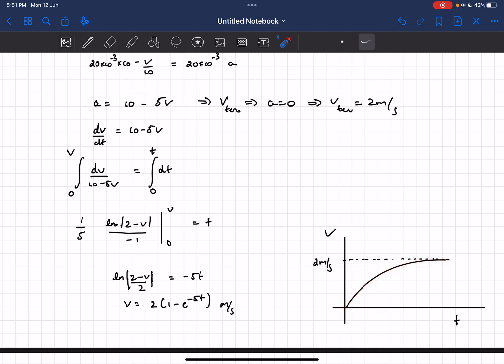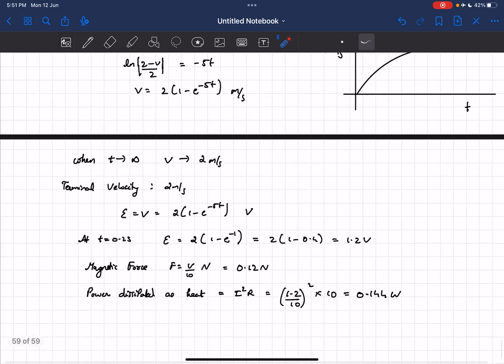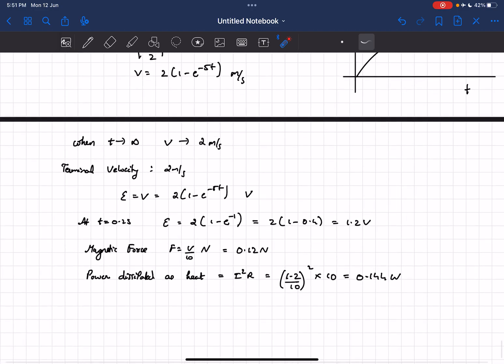We had to calculate the induced EMF when time t was 0.2 seconds. We earlier calculated the induced EMF to be numerically equal to the velocity of the rod, so we just have to substitute the value of time in this and we'll get the value of induced EMF as 1.2 volt.